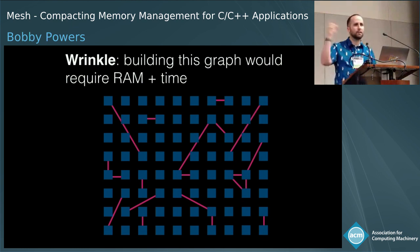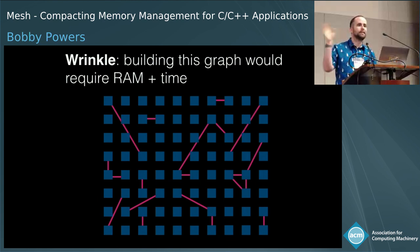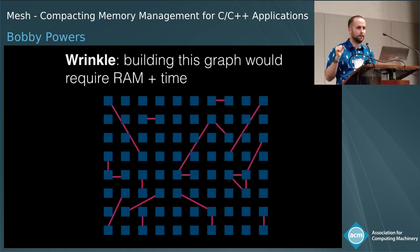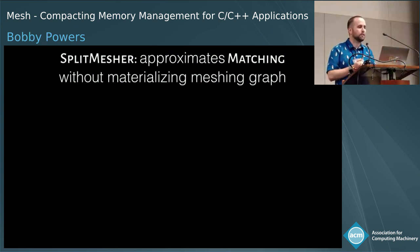The remaining challenge is that if we tried to actually build this graph in memory and run an existing algorithm on it, the space required to represent it would actually dwarf the space we'd get back through meshing. So we came up with an algorithm called split mesher, a randomized algorithm that approximates matching without having to materialize the graph.